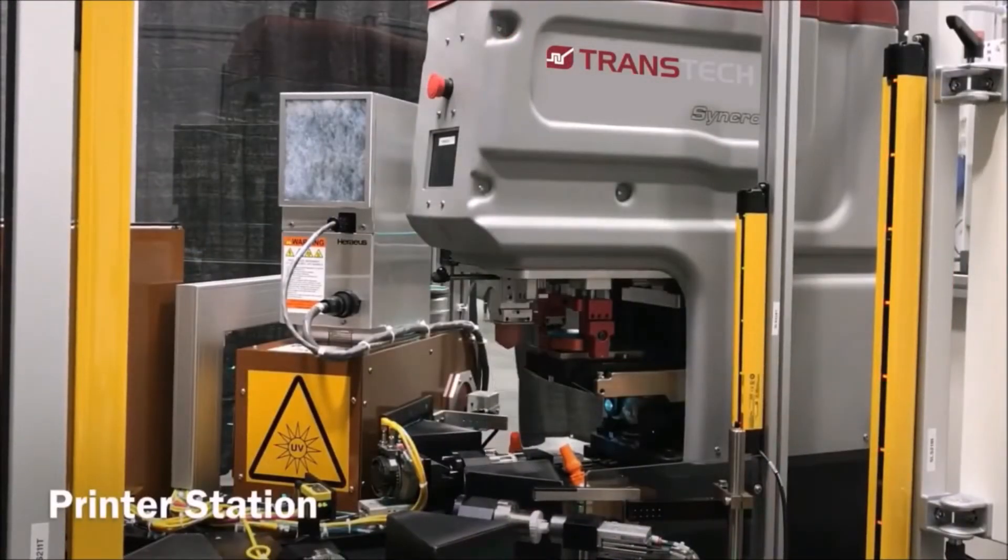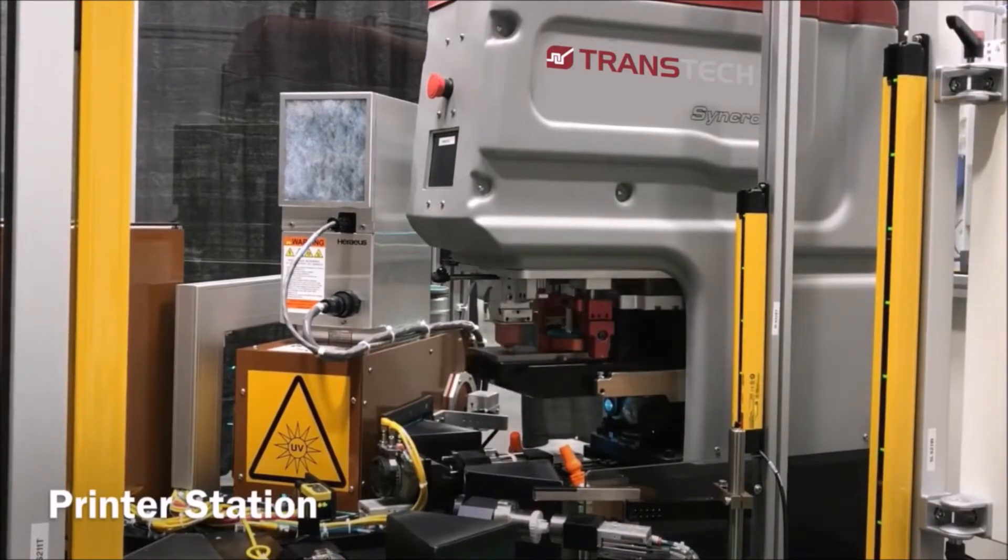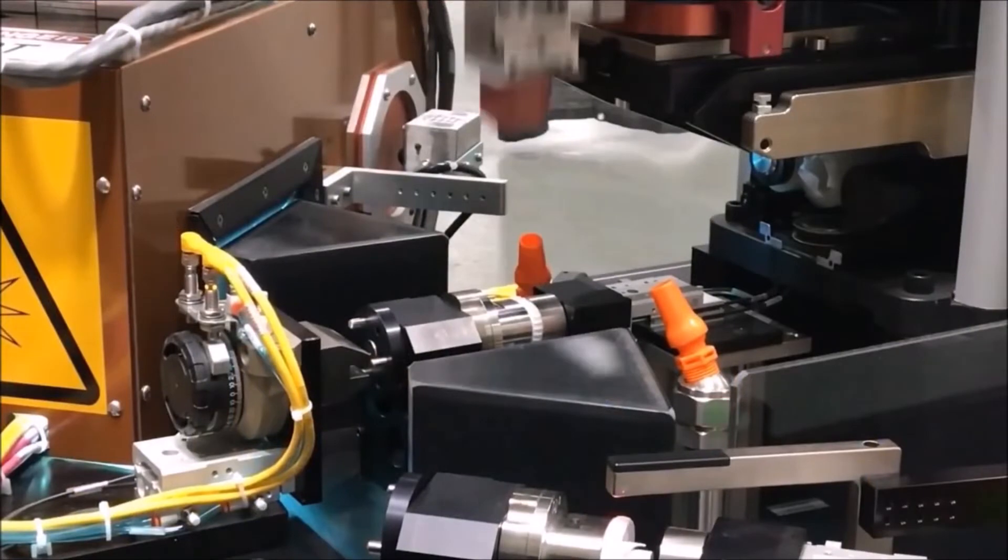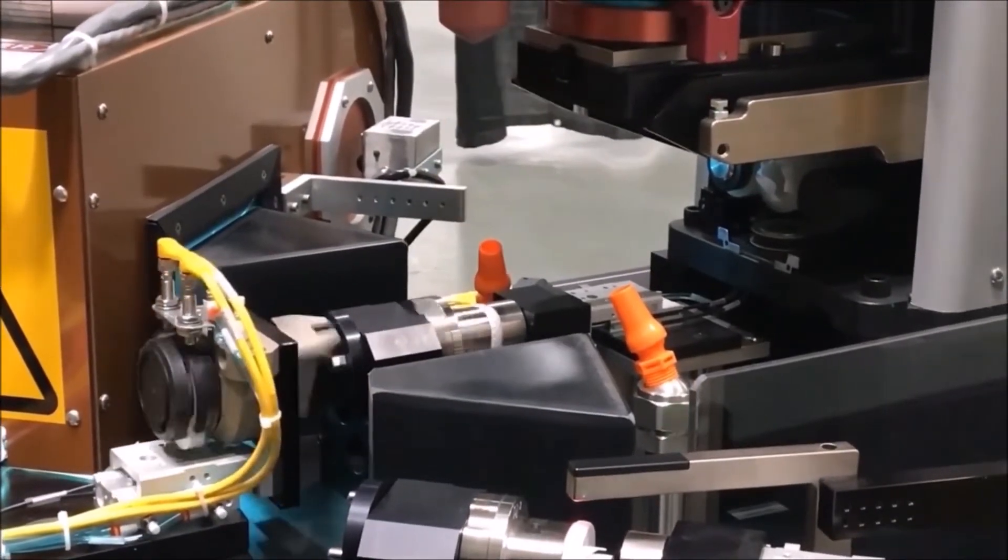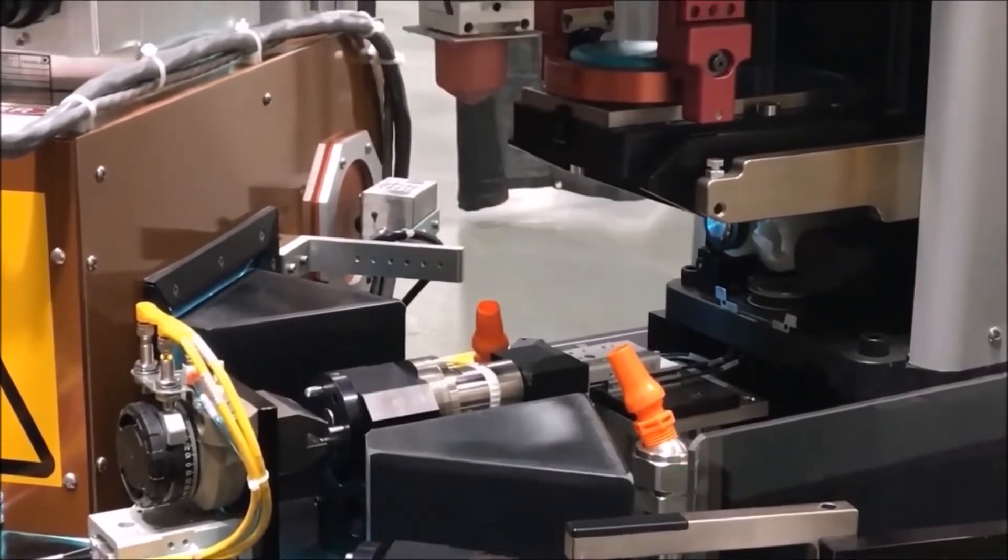The printer station then applies the image to the part. Here you can see a single part being decorated on three different sides. This is accomplished through the use of a custom mandrel that rotates the part.